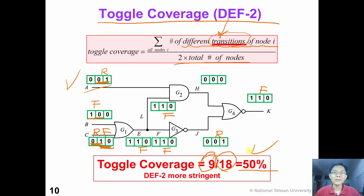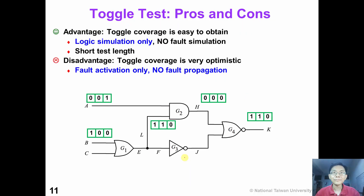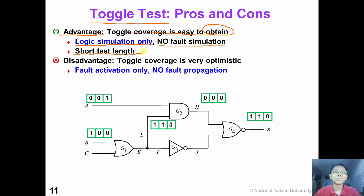From this example, we can see that definition number 2 is actually more stringent than definition number 1. In summary, the toggle test is very easy to generate. The advantage of toggle coverage is it's very easy to obtain — we only need logic simulation, not fault simulation, and the test length is very short. However, toggle coverage is actually very pessimistic because we only care about fault activation and not fault propagation. So toggle coverage is an upper bound of single stuck-at fault coverage or transition delay fault coverage.